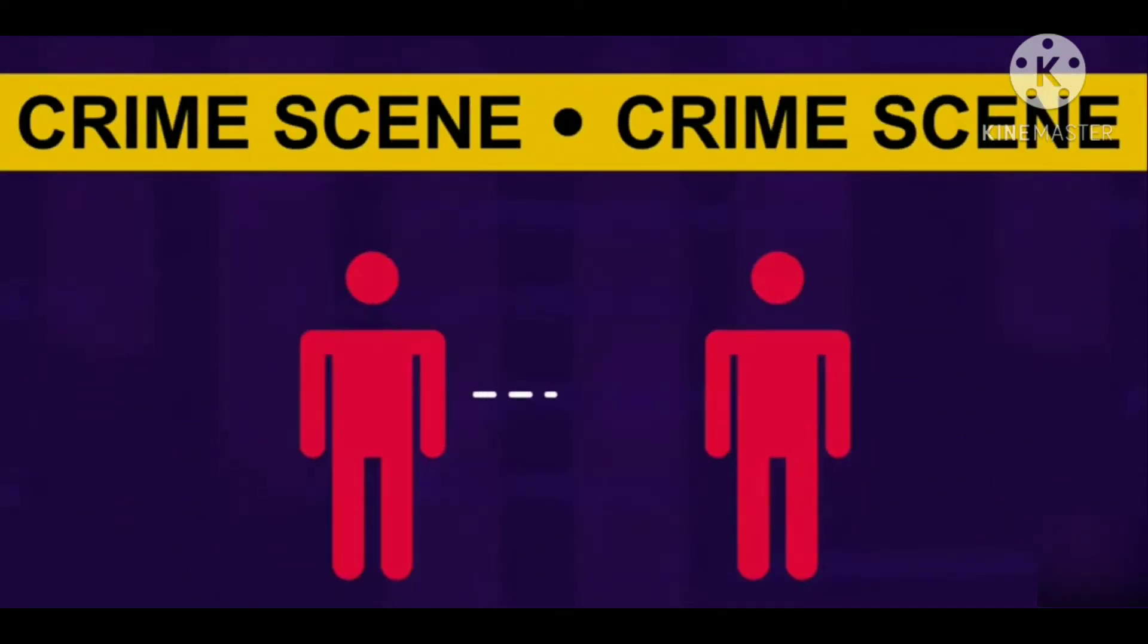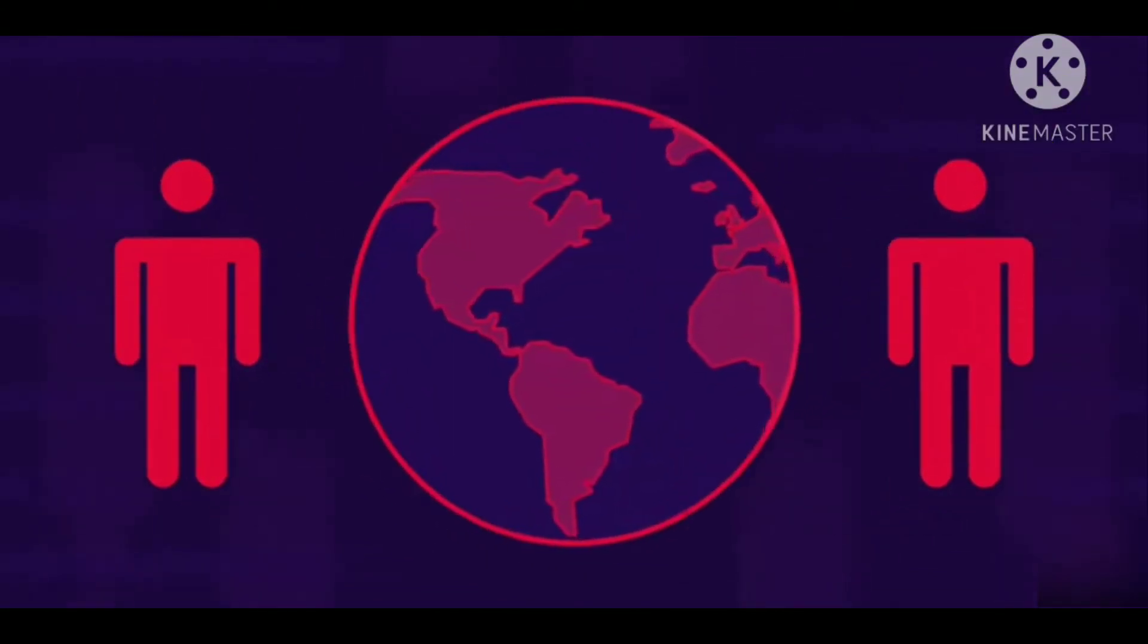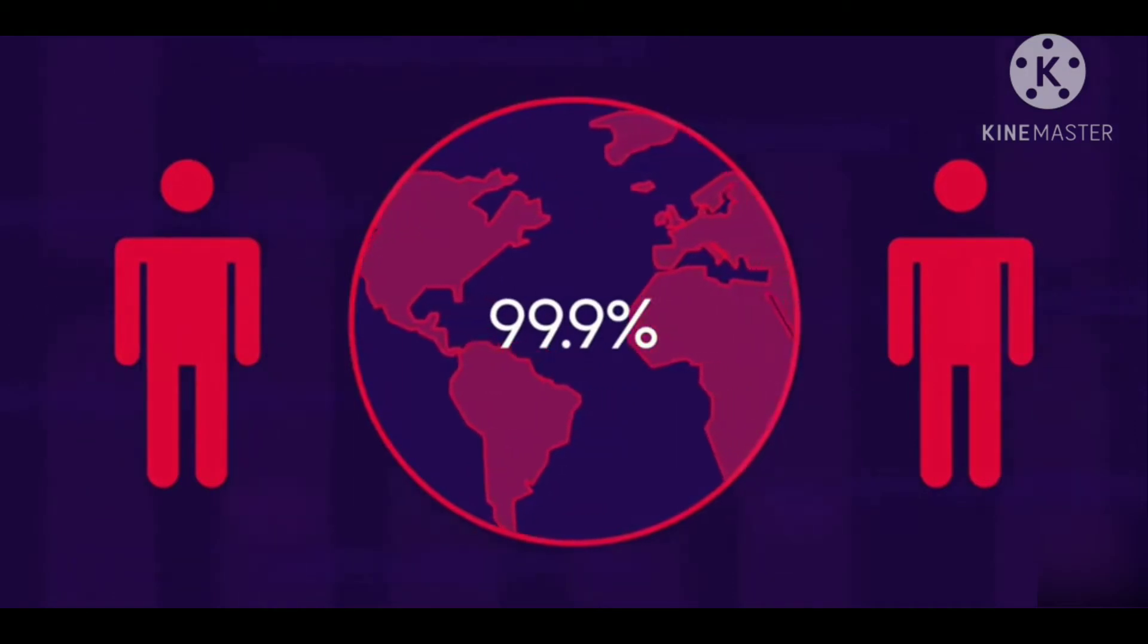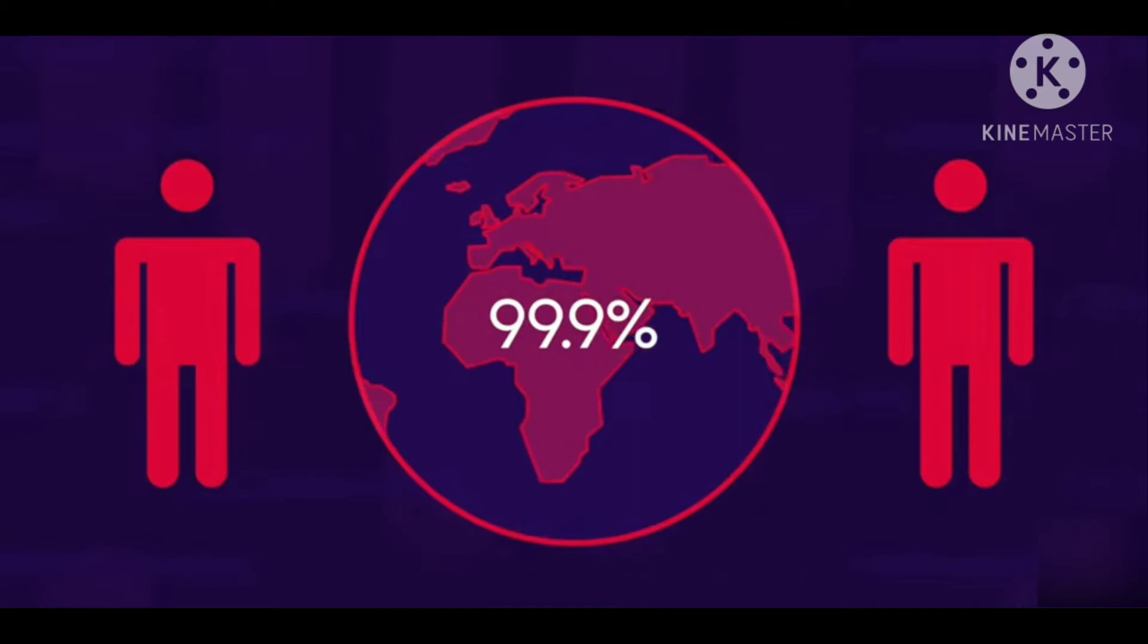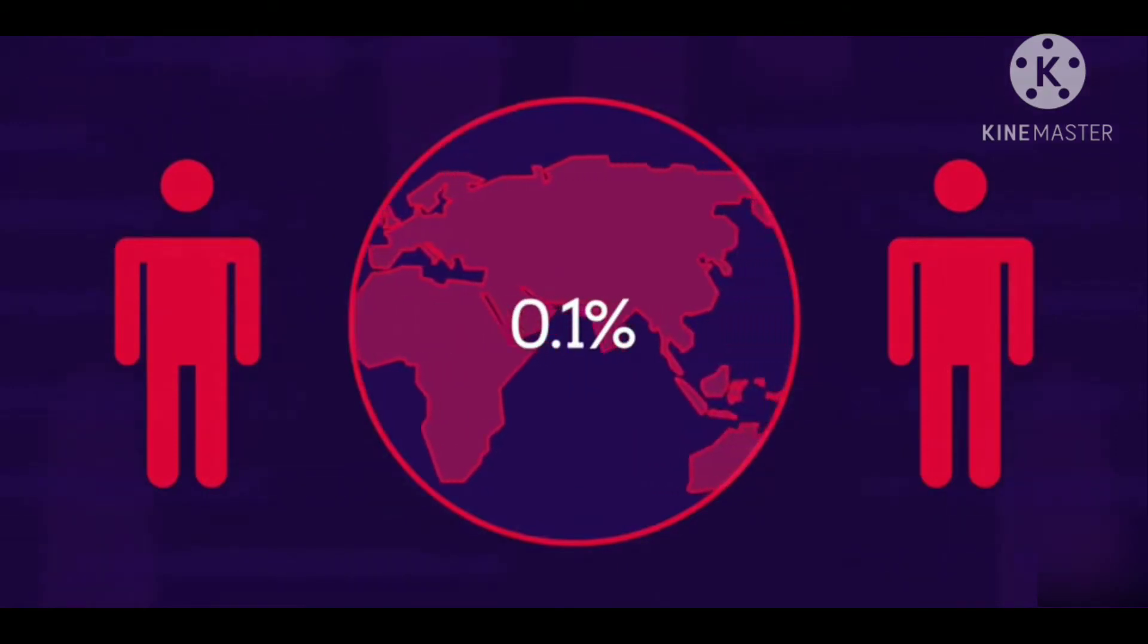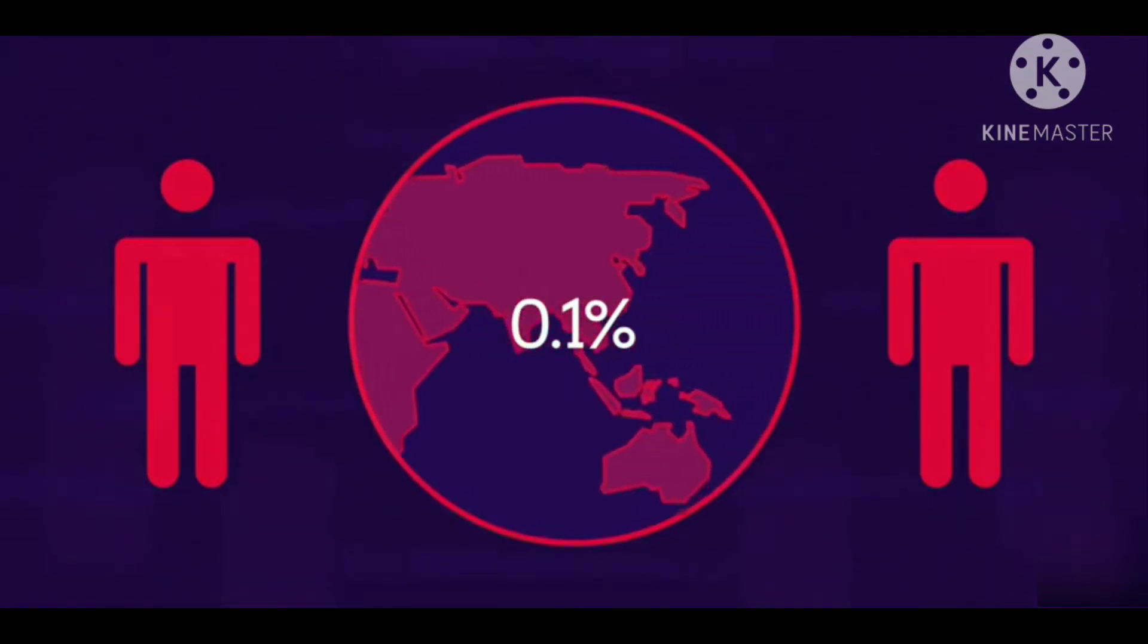It's used for solving crimes and can also confirm if people are related to each other like in paternity testing. Any two people in the world have 99.9% of their DNA the same. So this process analyzes the differences in the remaining 0.1%.